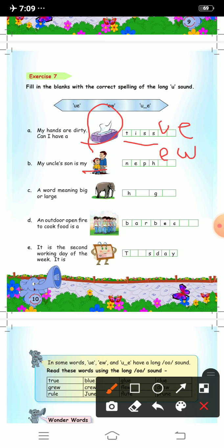Third one is a word meaning big or large. The word is huge. H-u-g-e. So it is u dash e. Here you will write u e, and that is huge.